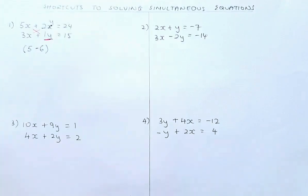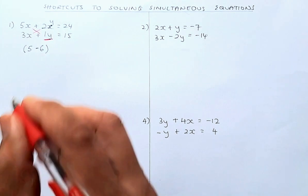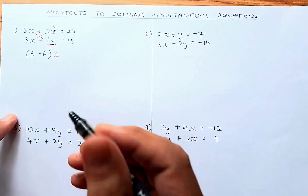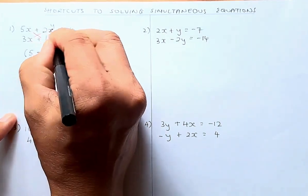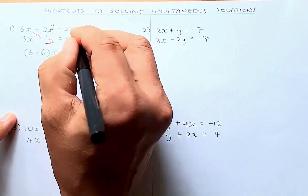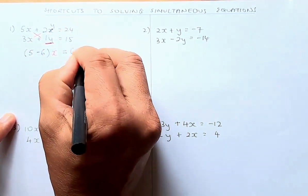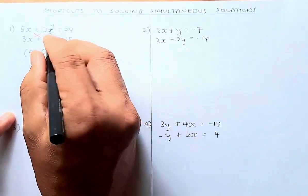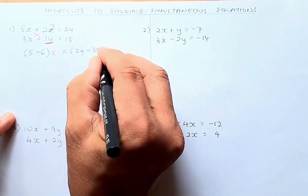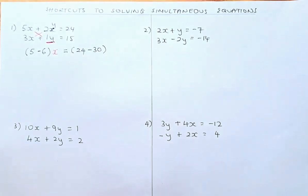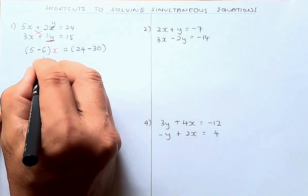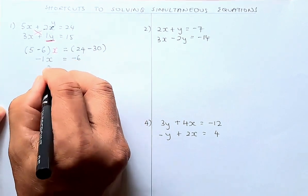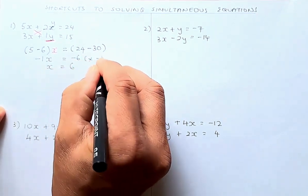Then you're going to put x there because x appears first, so just put x there. And then that is equal to — do the reverse now. The y is the pivot, so 1 times 24 is going to be 24. And then you're going to minus the opposite end: 2 times 15 is 30. So now you solve: 5 minus 6 is going to be minus 1x, and 24 minus 30 is going to be minus 6. So x is equal to 6, because you multiply by negative 1 on both sides.